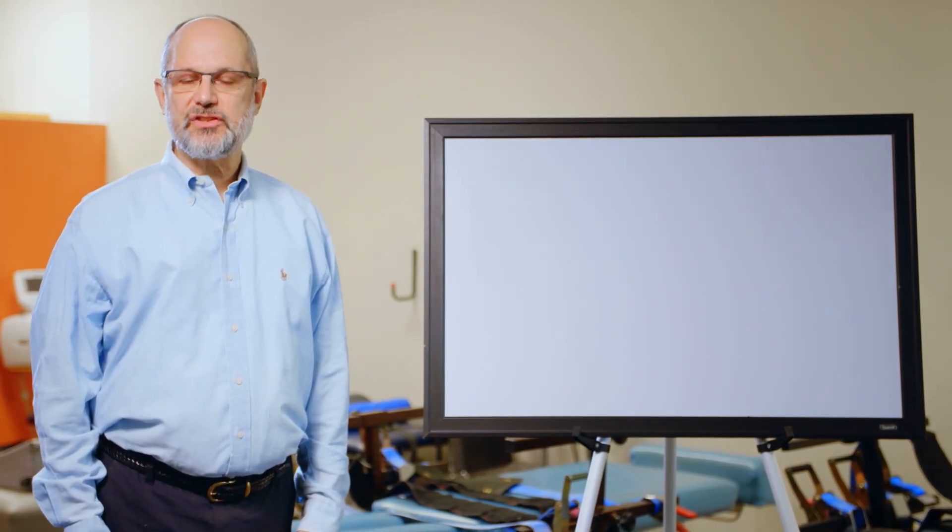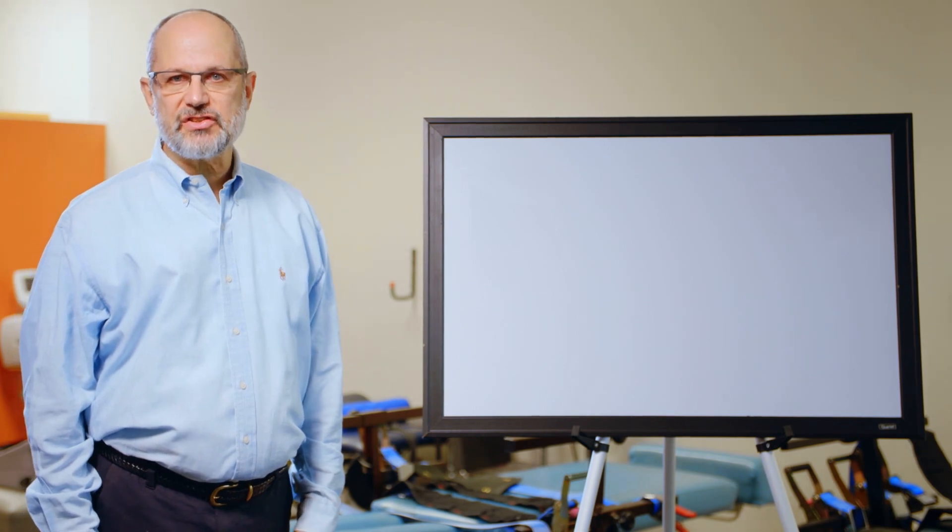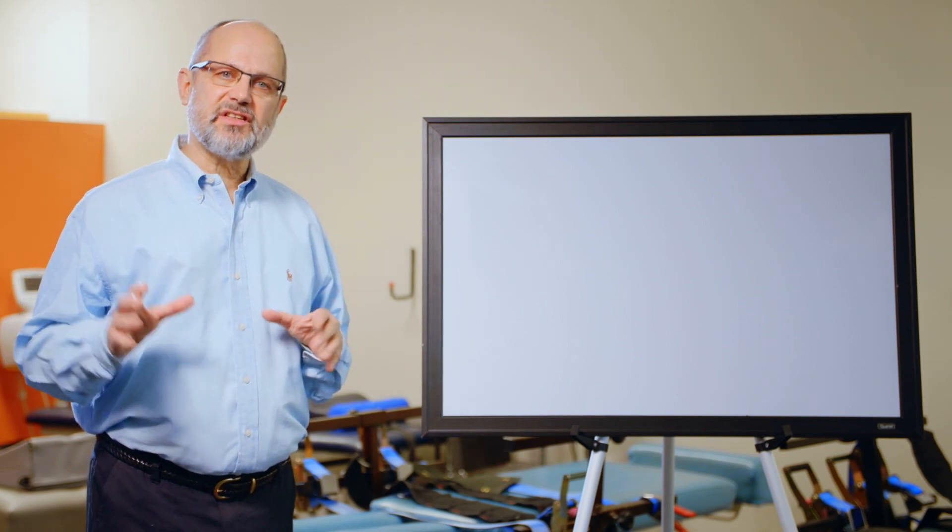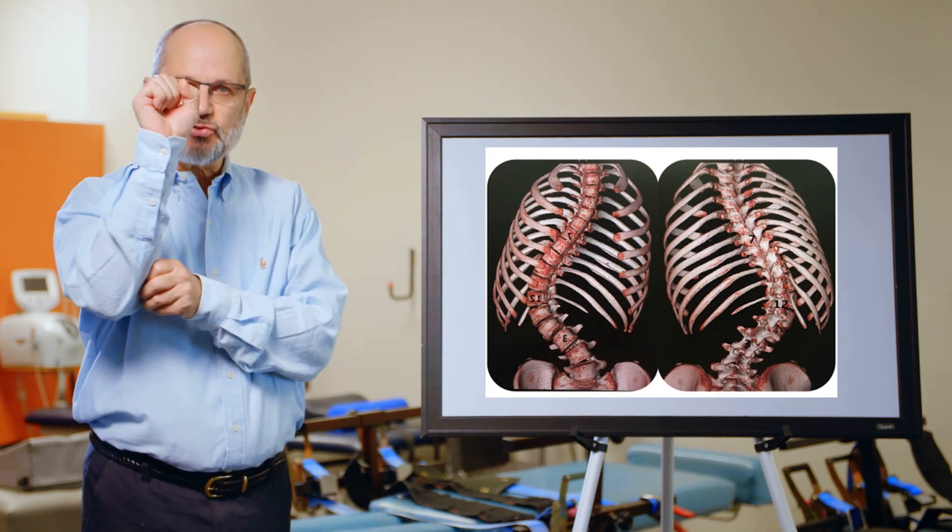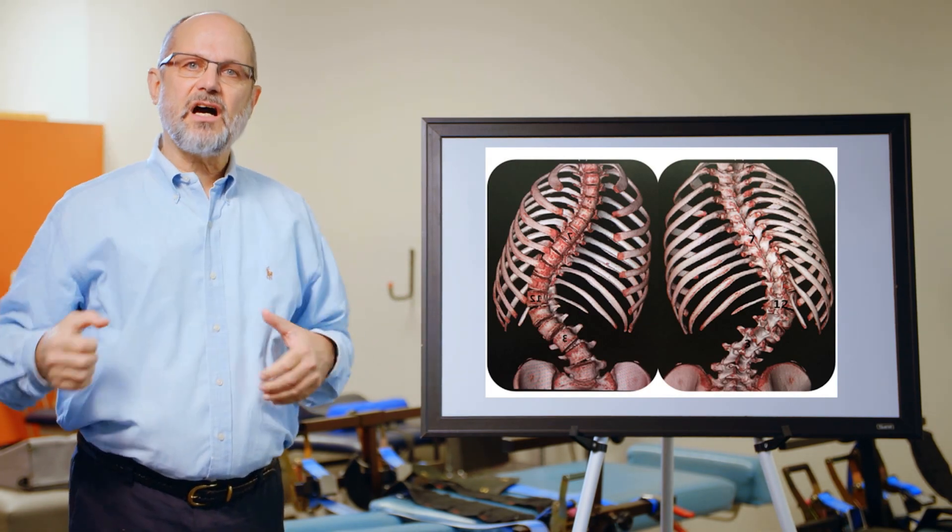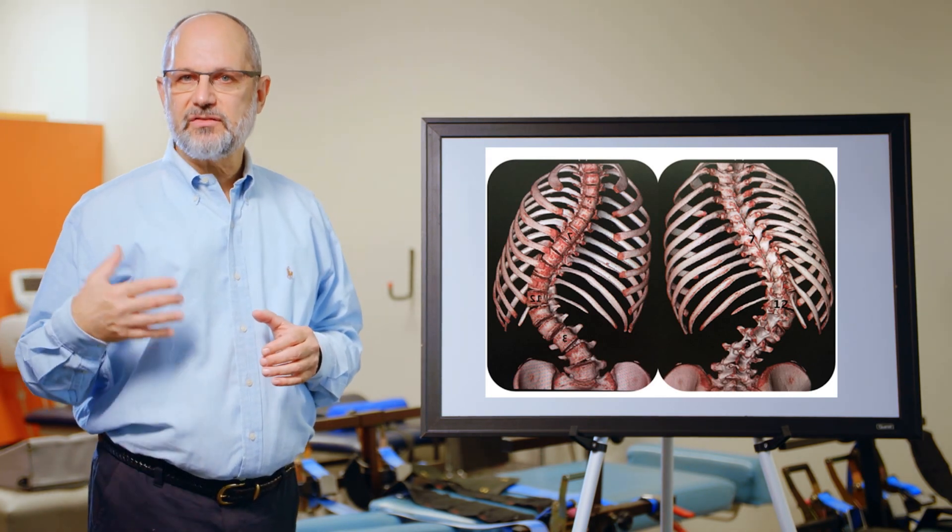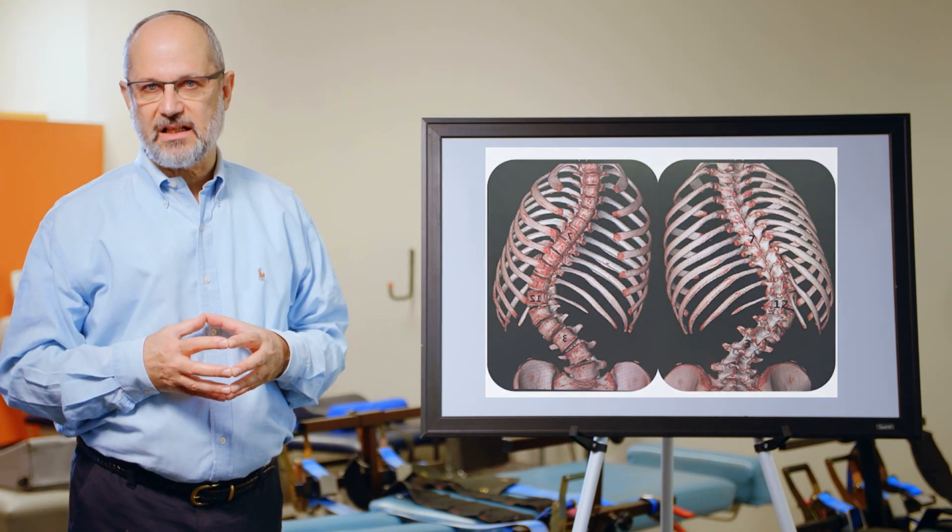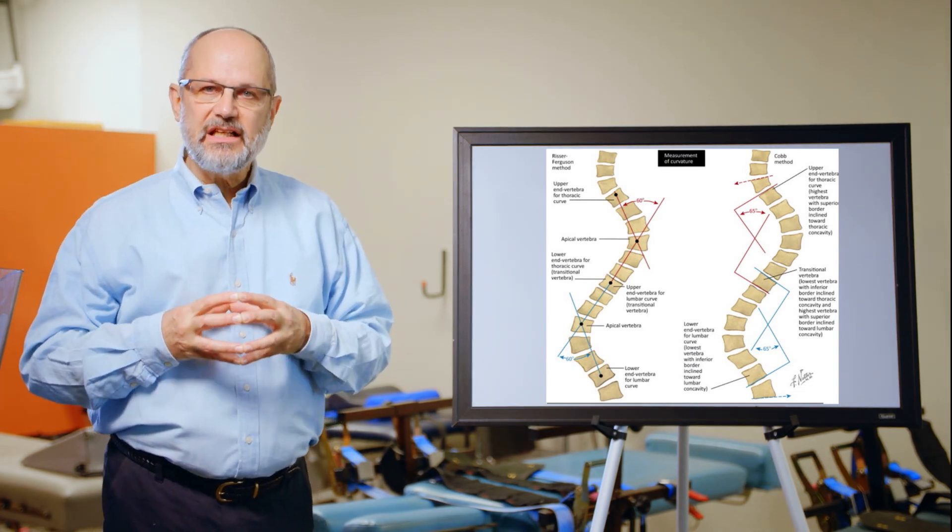While the Cobb method is used to measure most scoliosis, once we get a severe rotoscoliosis, another method called Ferguson's method can be used, which is more accurate with very large curves. We think of scoliosis as just a side-to-side displacement of the spine, but as we can see in this CT image, there's strong twisting taking place, and Cobb angle measurement does not show the accuracy of rotation in curves above 50 degrees. In that situation, Ferguson's method would be used to analyze the spine.